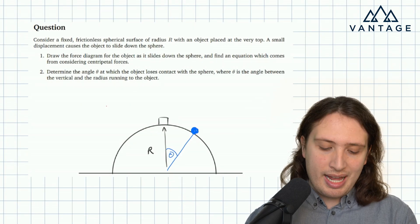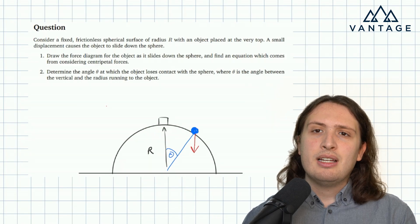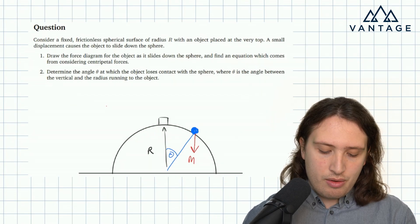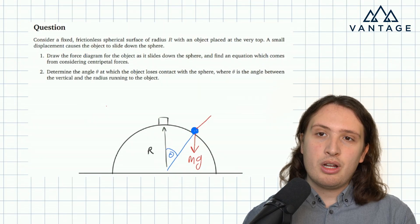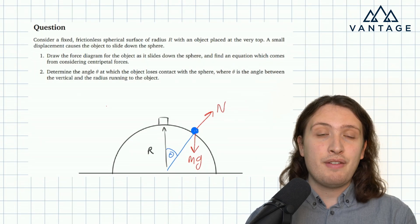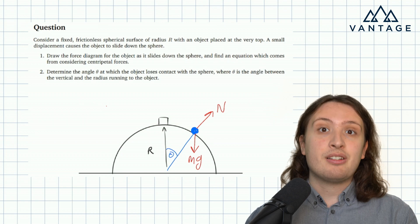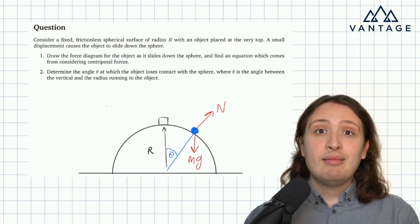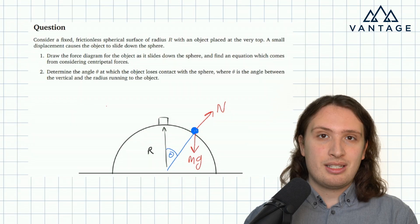So what are the forces at play? First of all, we've got the weight of the object, so mg, if we write m for the mass of the object. We've also got a normal reaction force. That's going to be perpendicular to the surface of the hemisphere, since that's what the object's actually sitting on, and it's going to be acting outwards. And that's it. There's no friction, so it is literally just these forces.